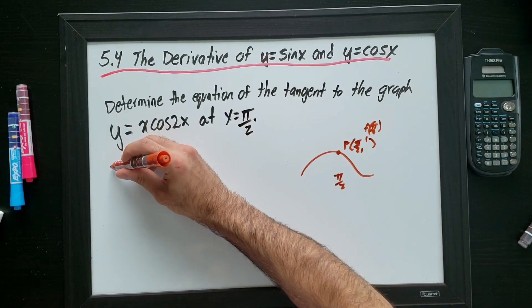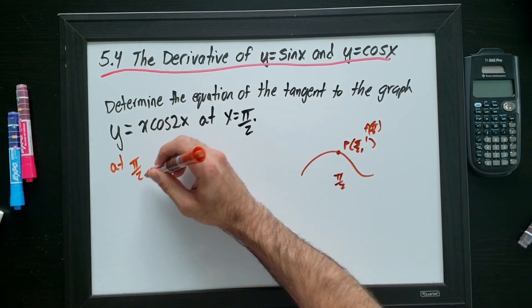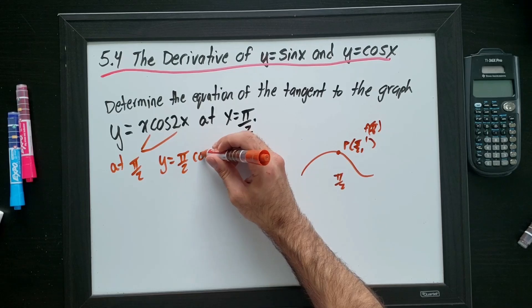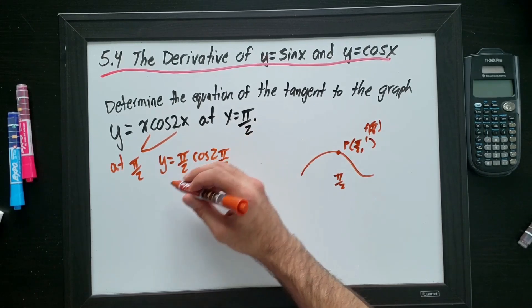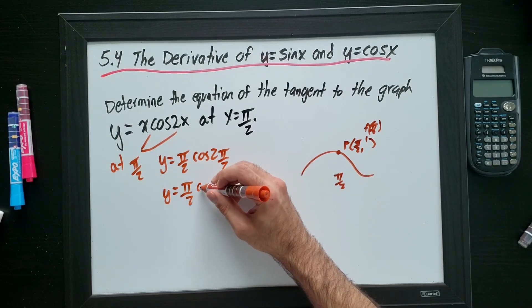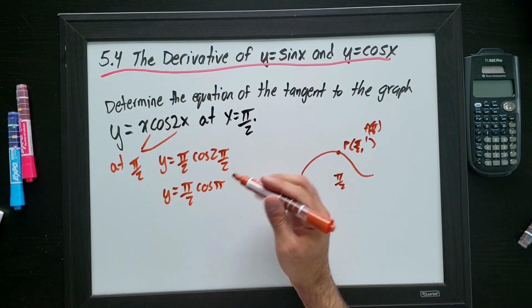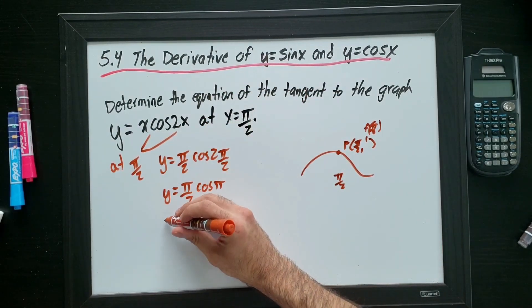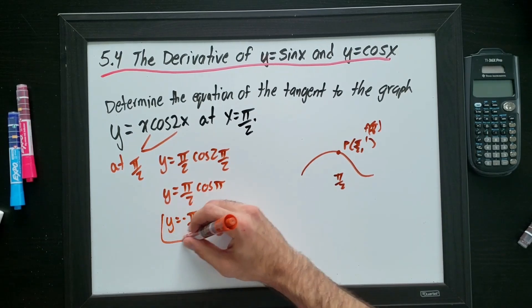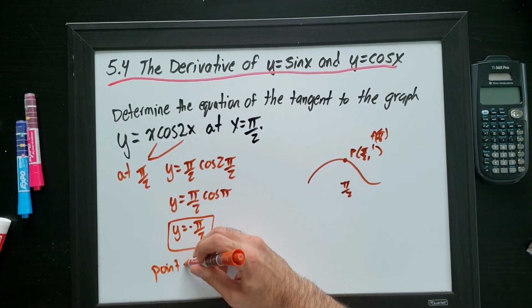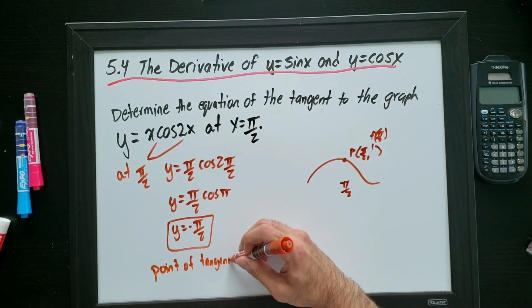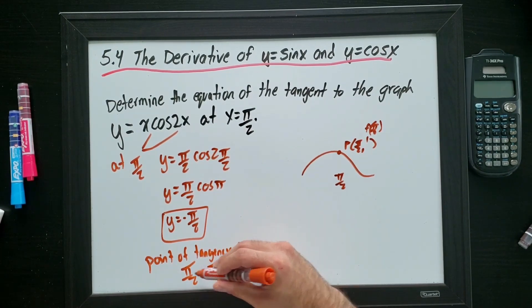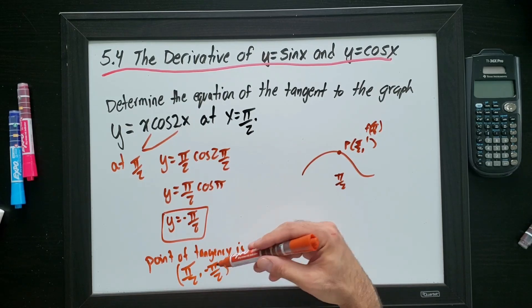Okay. So at x, at pi over 2, we just plug it in. Plug this into my x values. I get pi over 2 cos of 2 times pi over 2, also known as pi over 2 cos pi. Cos pi is negative 1, right? The horizontal distance of pi for cos is negative 1. So this is just negative pi over 2. So my point of tangency is pi over 2, negative pi over 2.